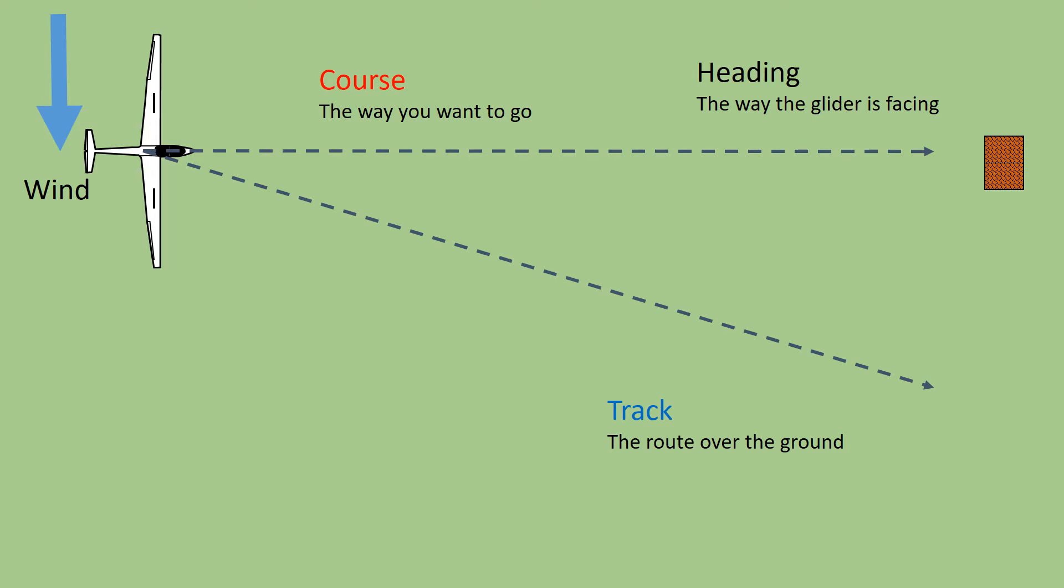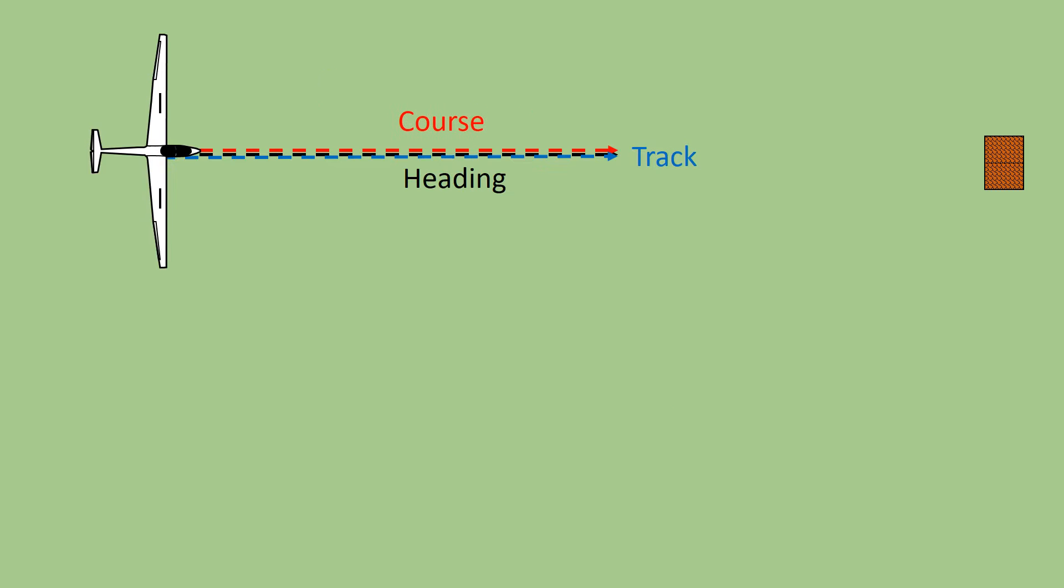In other words, course is what we want, heading is what we can control, and the track is the result of our heading and the wind strength and direction. In a no wind condition, setting our heading to match our course results in a track that also matches our course.